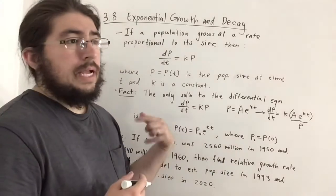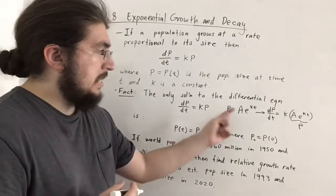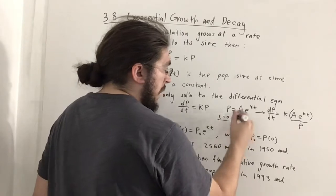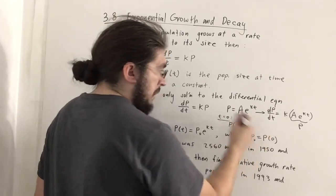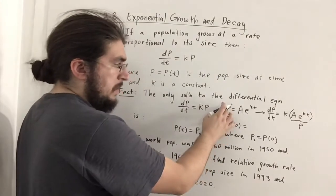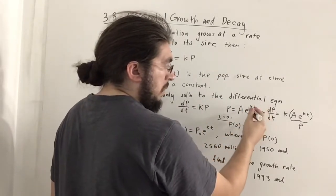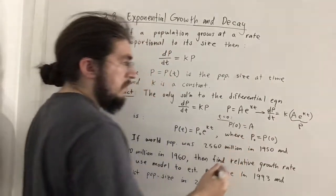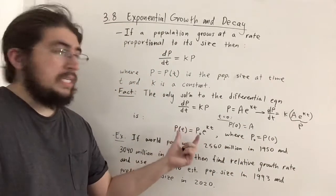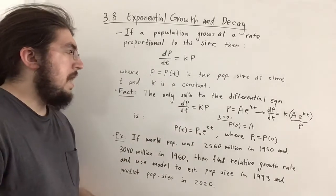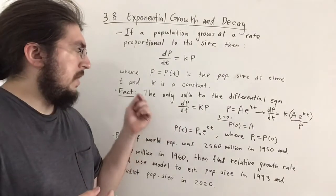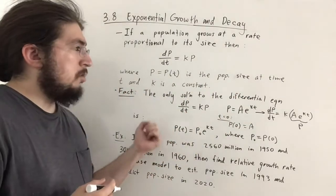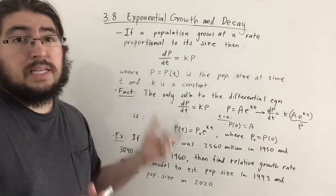To show that the constant a equals P(0), we plug in t = 0. That gives us P at time 0. Since k times 0 is 0 and e^0 = 1, we get a = P(0). This assures us that this is indeed a solution. A differential equation is an equation involving derivatives of a function, and its solution is the function that satisfies it.